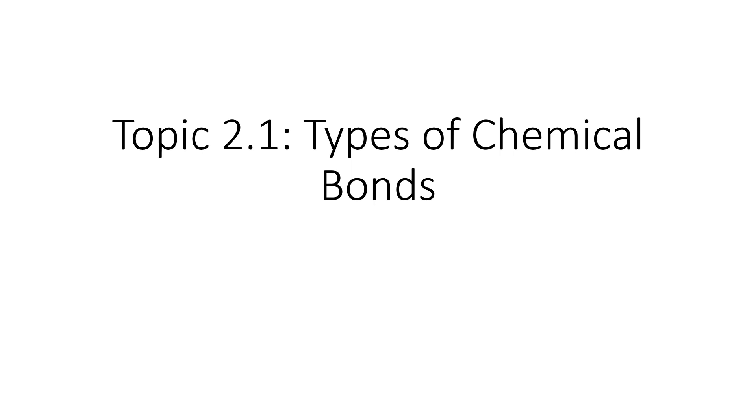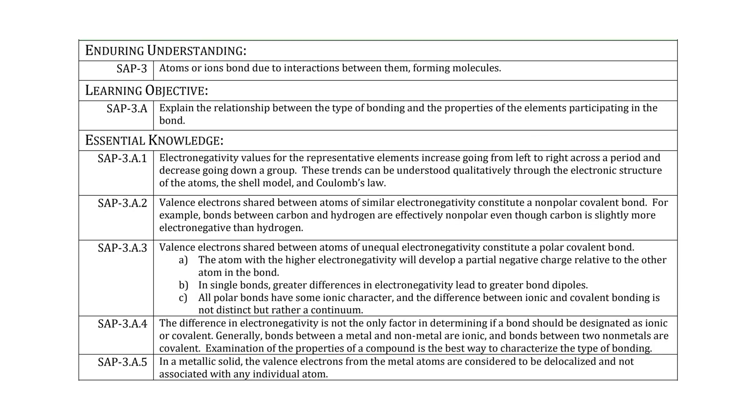Hi guys, this is Topic 2.1: Types of Chemical Bonds. This video is going to explain how to solve some problems regarding the strength of different types of bonds. As you saw in your notes, the objective for this topic was to explain the relationship between the type of bonding and the properties of elements participating in the bond. The different types that were talked about were covalent, polar and nonpolar, ionic, and metallic.